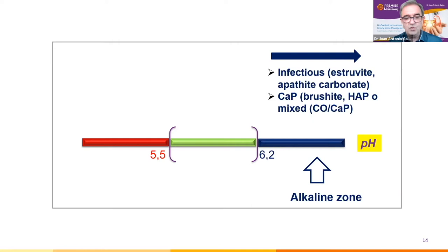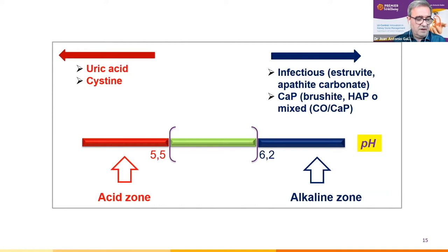Carbonic anhydrase inhibitors such as acetazolamide and topiramate can also lead to a similar scenario. On the other side, urine pH is the most important factor for uric acid stone formation.